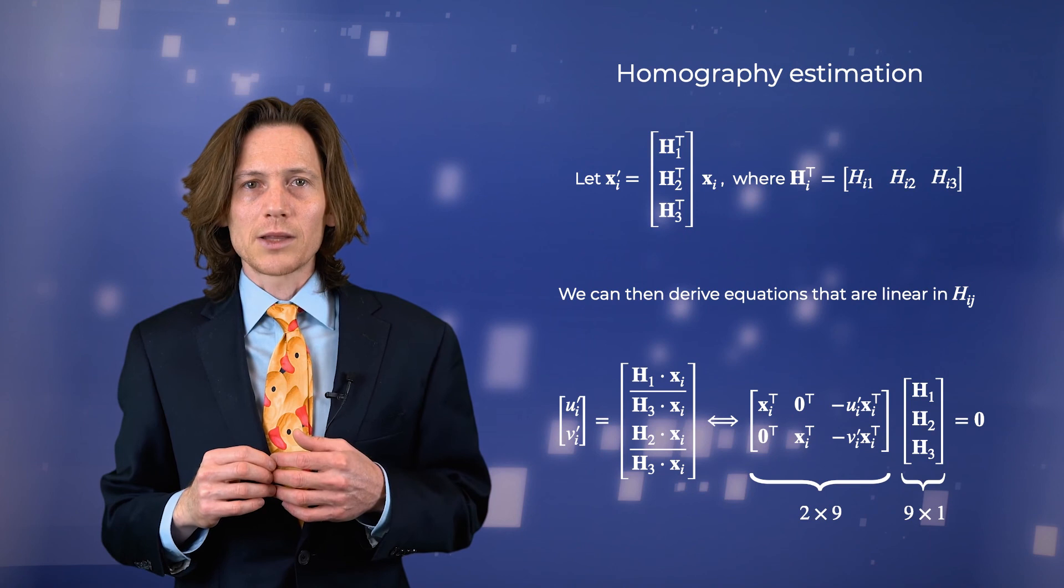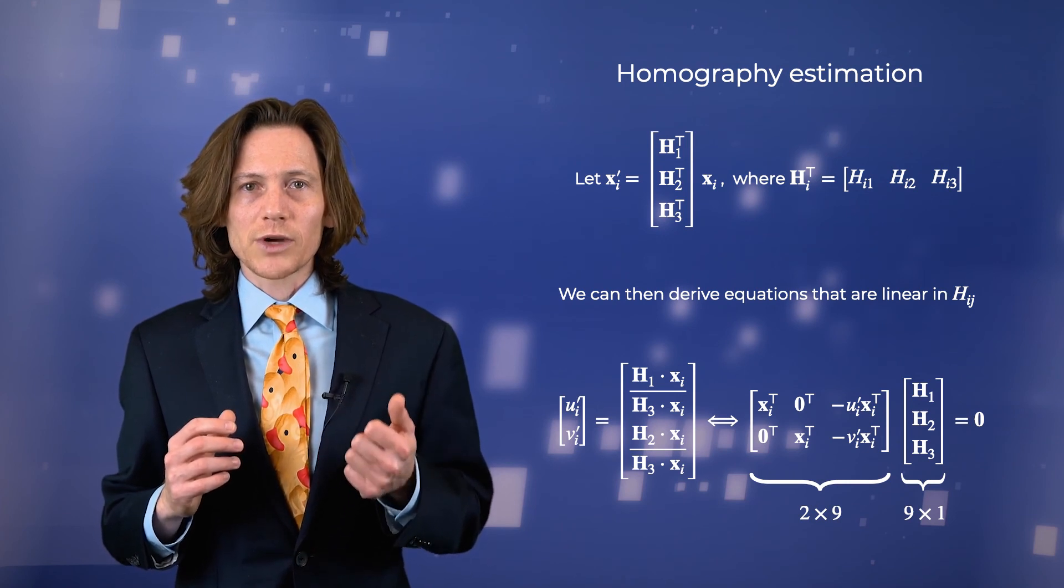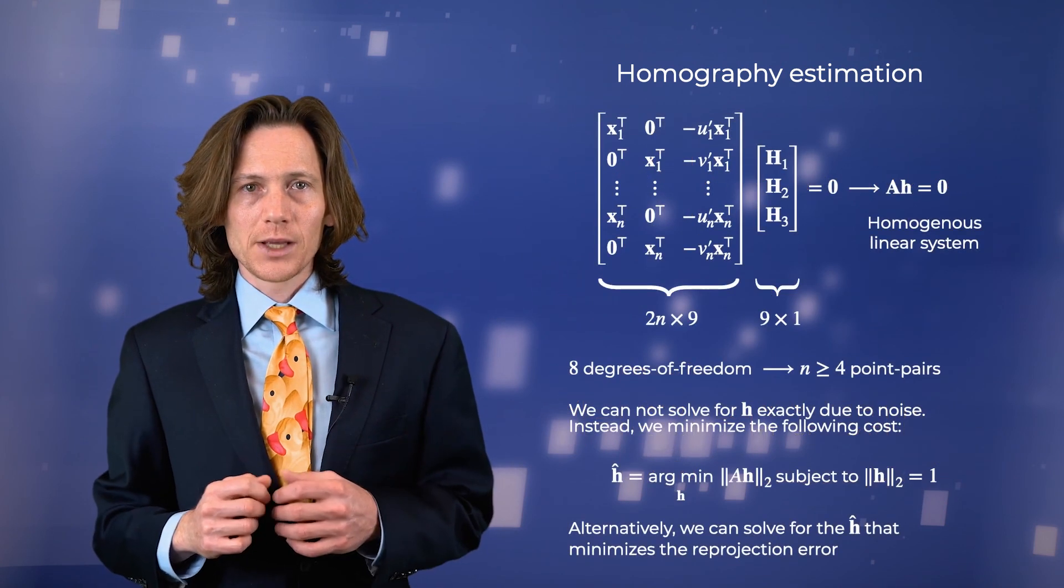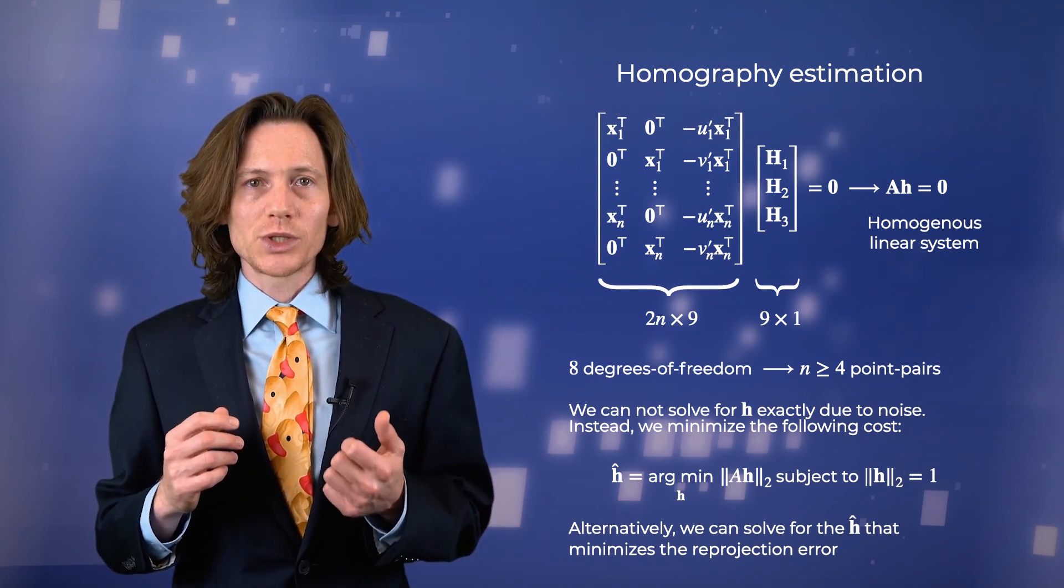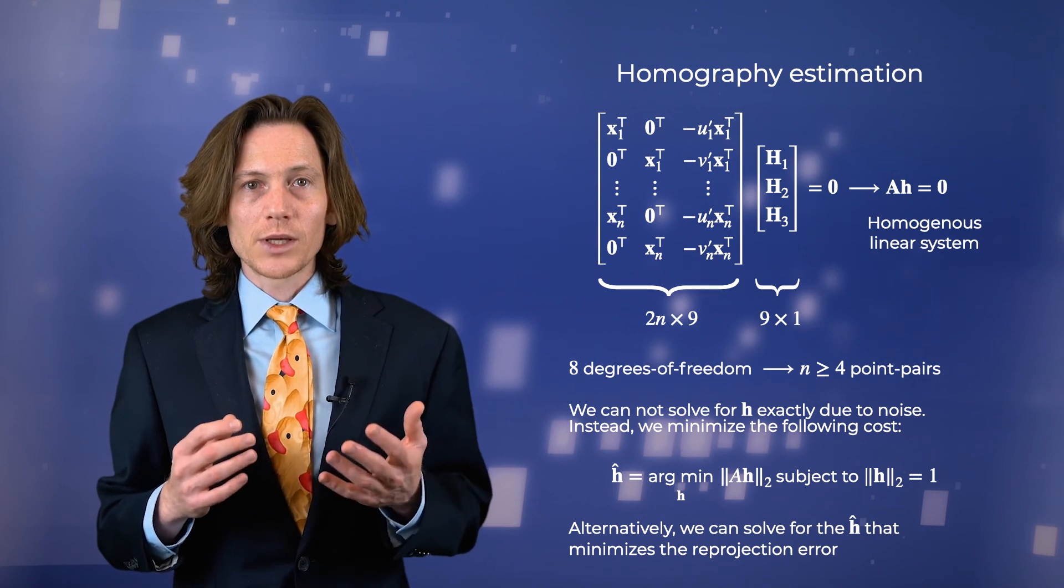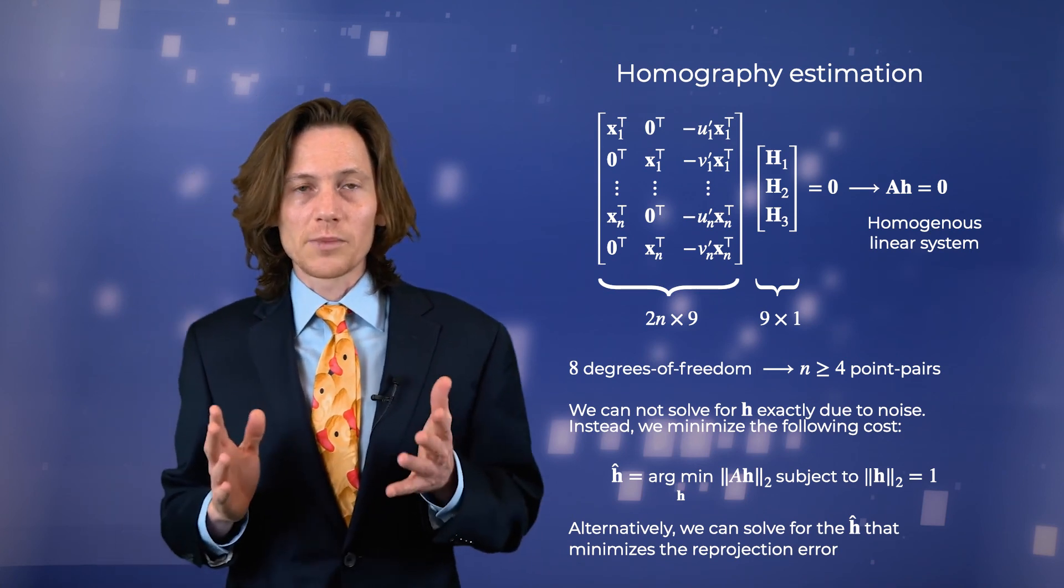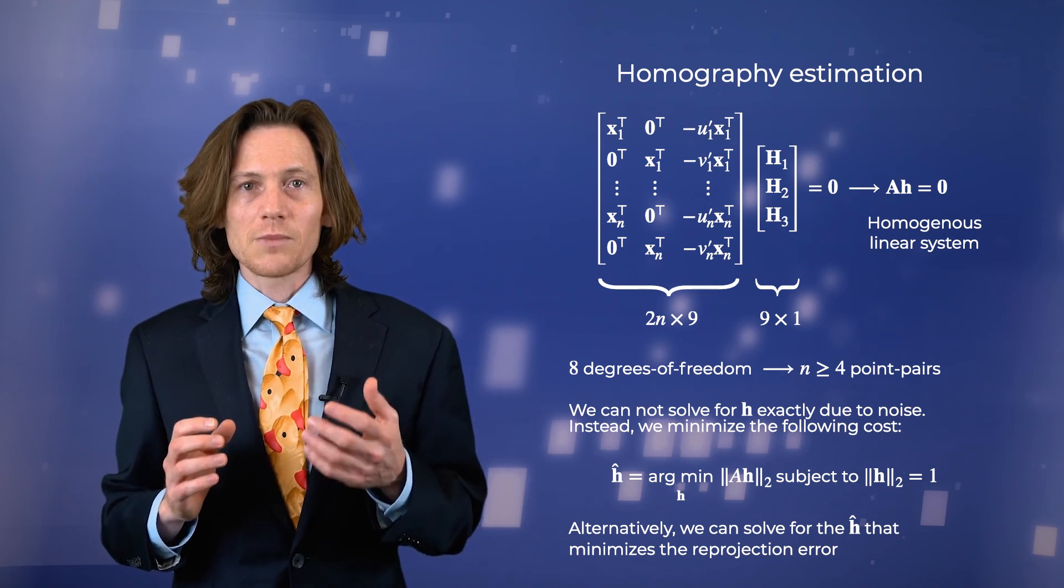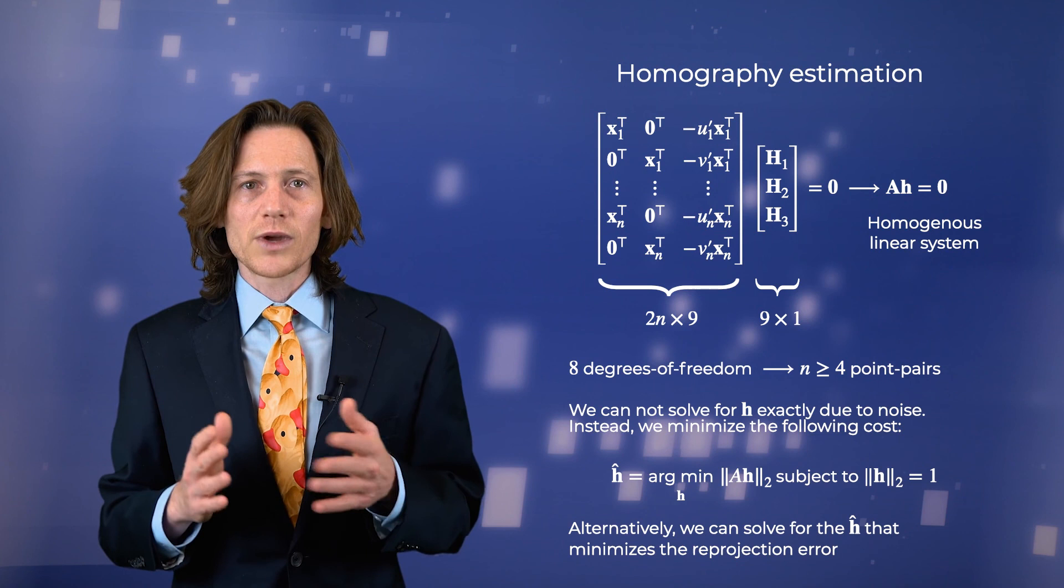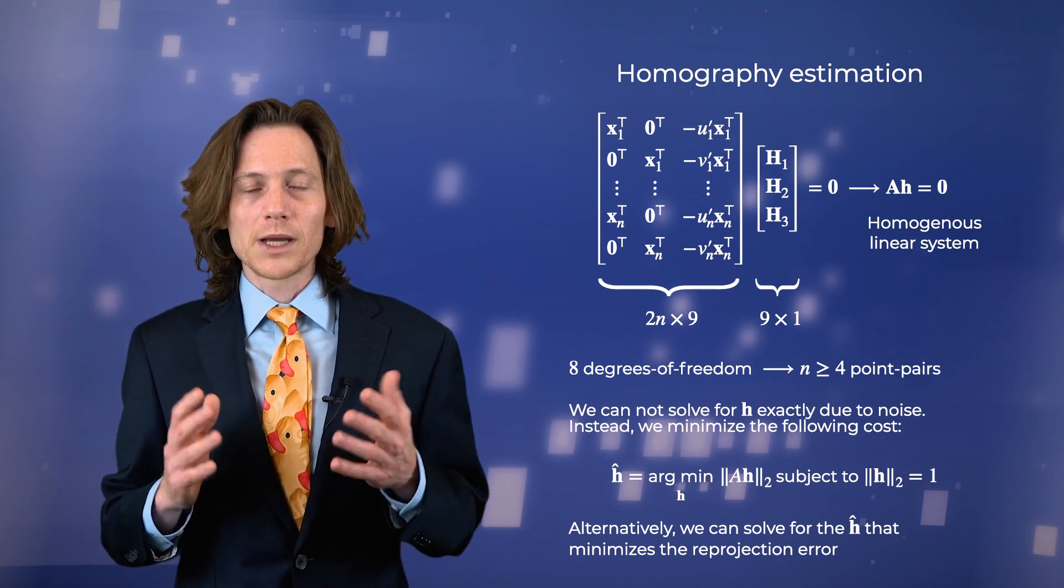The question now is how we go about estimating the homography matrix based on a set of known point correspondences. Just as we did with the camera matrix, we can use the expression for the projective transformation to derive two equations for each point pair that are linear in the elements of the homography matrix. Given n point pairs, we can concatenate these equations to form a homogeneous linear system. Assuming that we have at least four point pairs, the matrix A, which is size 2n times 9, has a rank of 8. The non-trivial solution to the set of equations then lies in the one-dimensional null space of A. As we discussed earlier, we can't hope to solve for the homography exactly. Instead, we can solve for the homography that minimizes the L2 norm of A times H. In part to avoid the trivial solution, we impose the constraint that the solution be a unit vector. We can then solve for the vector H and, in turn, the homography via singular value decomposition. Just as with the camera matrix, a better approach is to estimate the homography by minimizing the reprojection error.